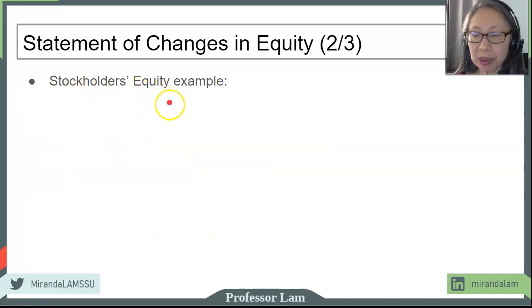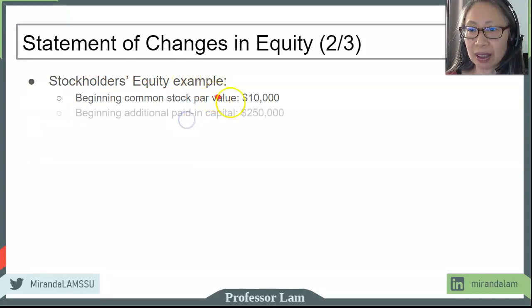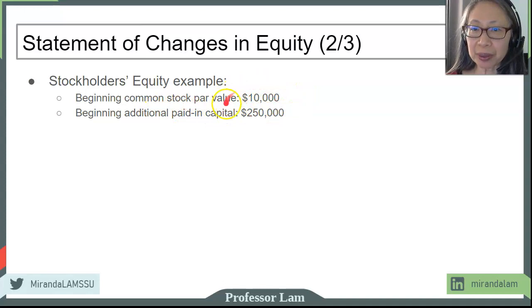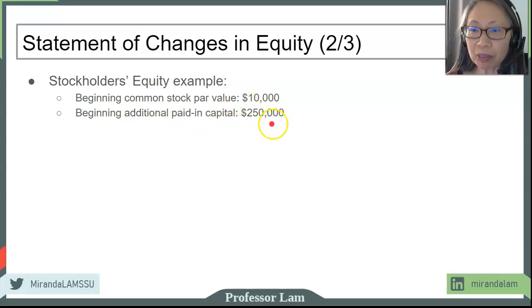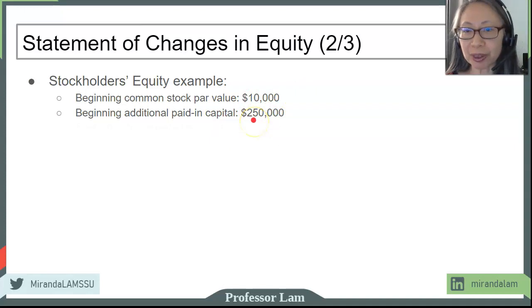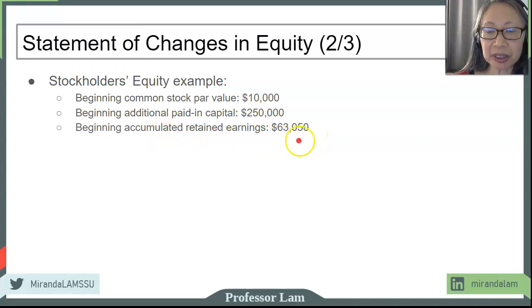Since stockholder's equity is a bit more complicated, let's walk through an example. Say you have a beginning common stock par value of $10,000 — par value is specified by the articles of incorporation — and a beginning additional paid-in capital of $250,000, meaning the company started with total equity of $260,000. The firm also has accumulated retained earnings at the beginning of the year of $63,050.